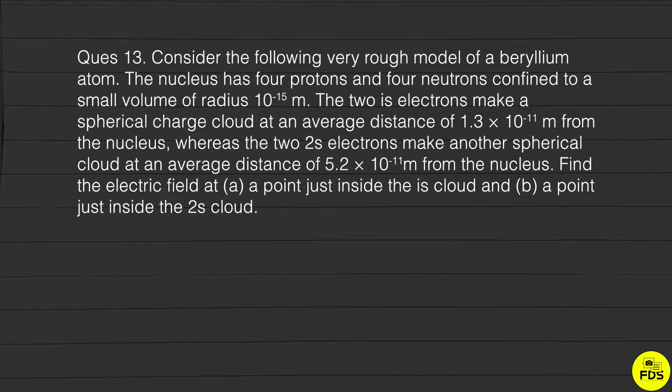meters from the nucleus. Find the electric field at (a) a point just inside the 1s cloud and (b) a point just inside the 2s cloud. So we have to work with a beryllium atom.